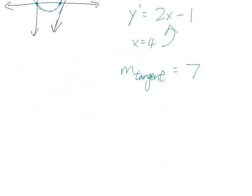And since the normal line is perpendicular to the tangent line, m normal, or sometimes we write m with a little perpendicular sign, that's going to be the negative reciprocal of the slope of the tangent line. Because if you remember from algebra 1, the slopes of perpendicular lines are negative reciprocals of each other.